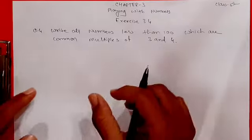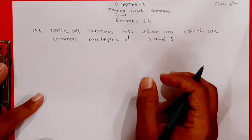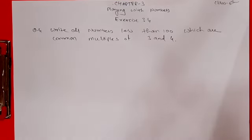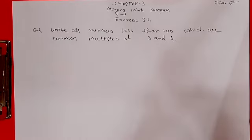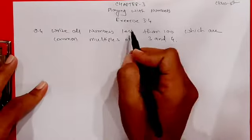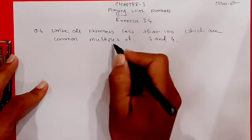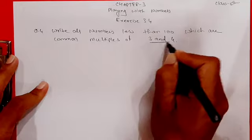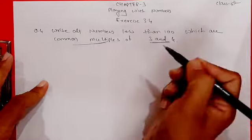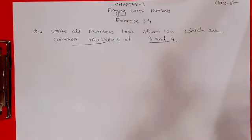Hello students, in the last video we discussed question number 1 to question number 3 of exercise 3.4. Today we are going to do question number 4 of exercise 3.4: write all the numbers less than 100 which are common multiples of 3 and 4.